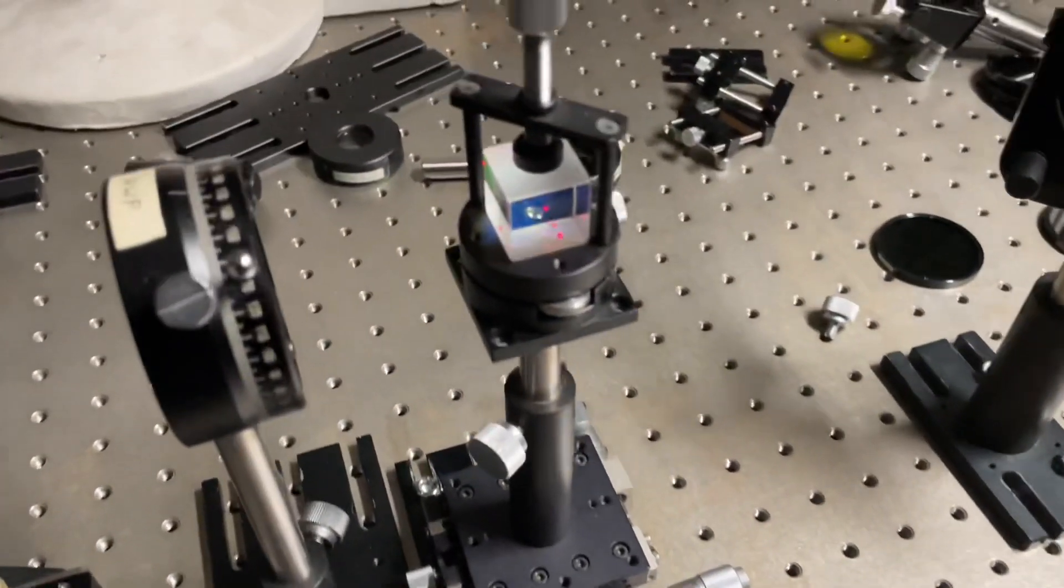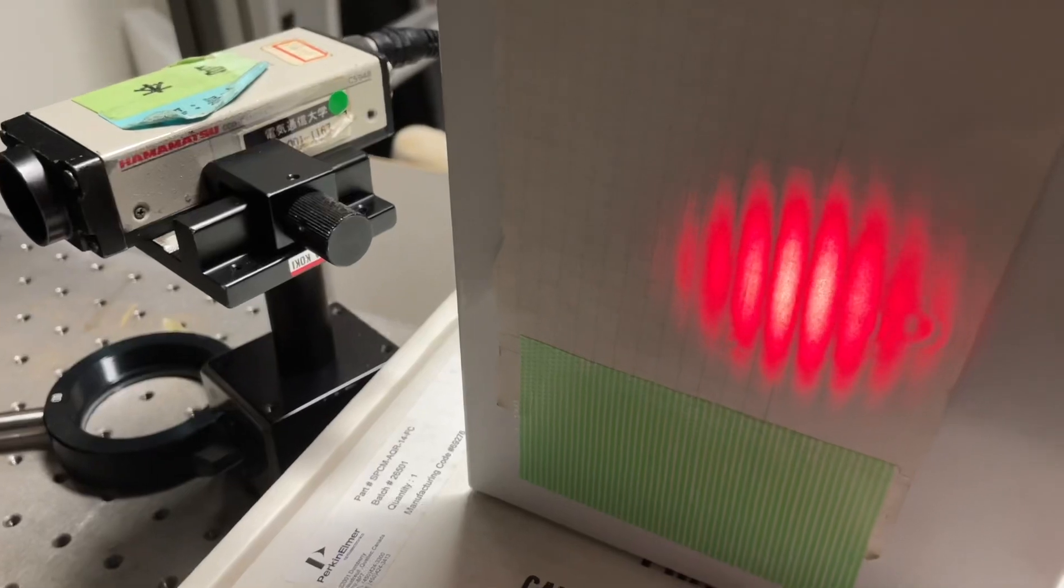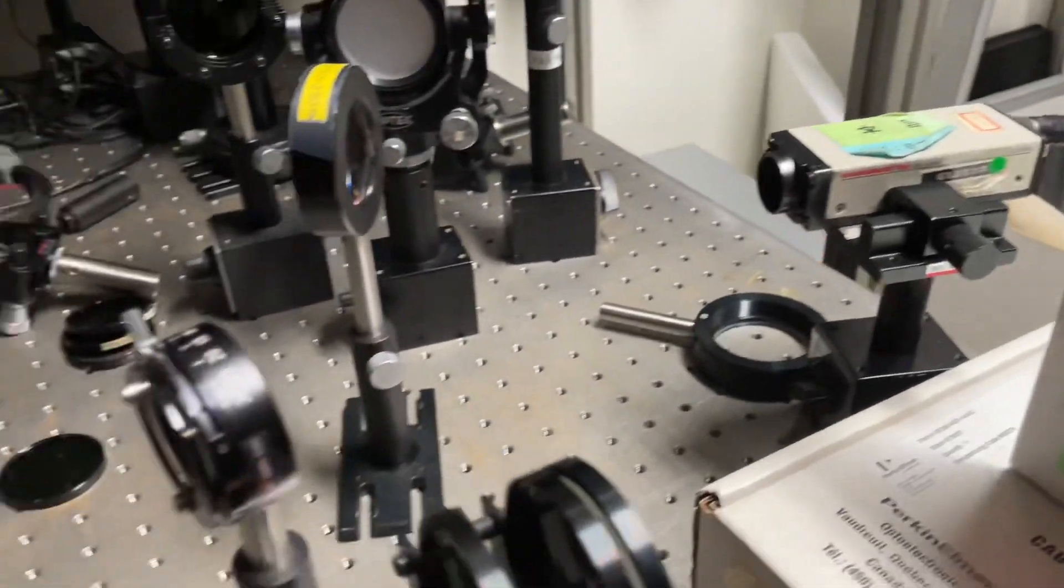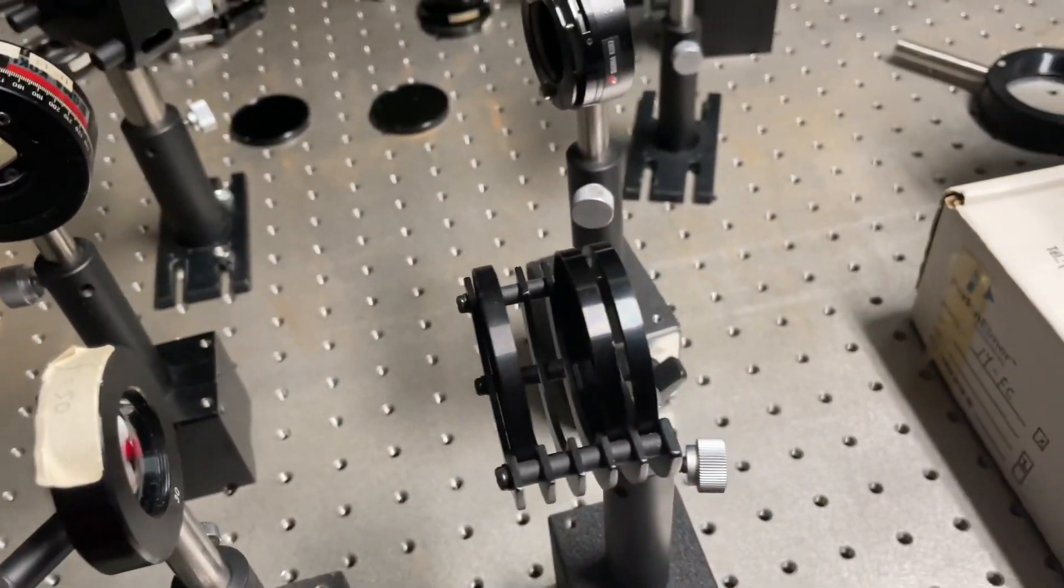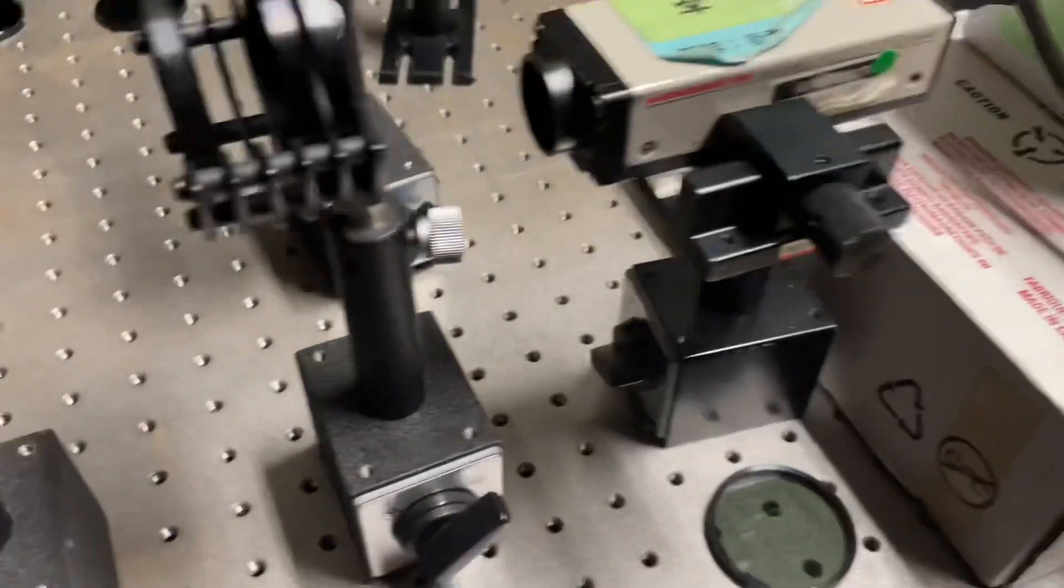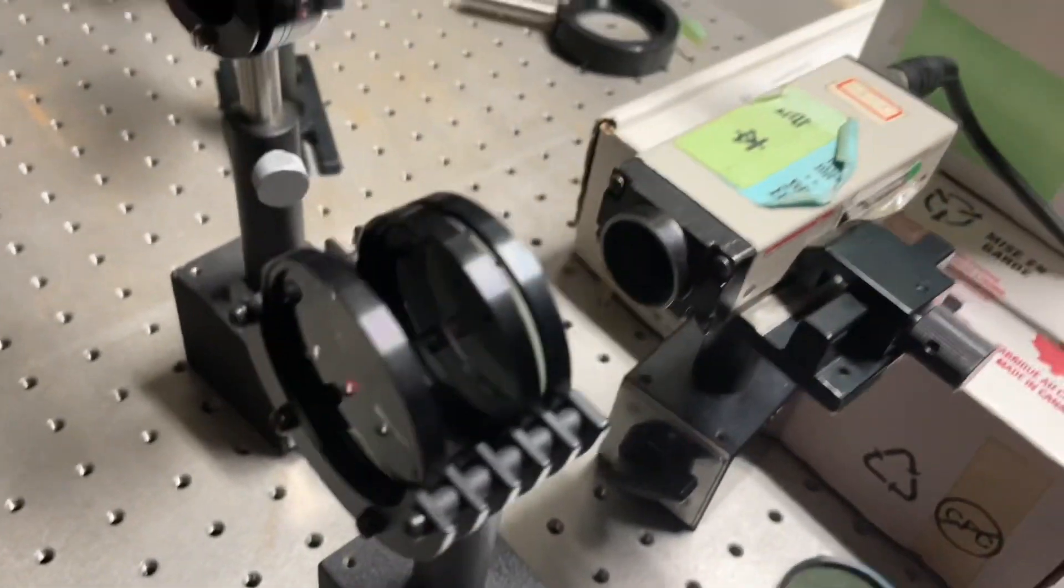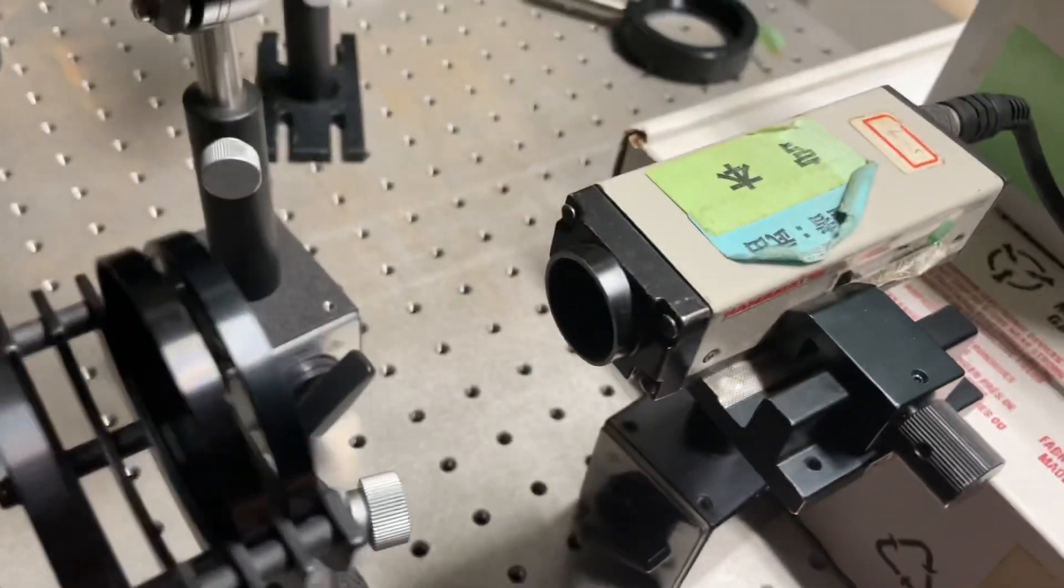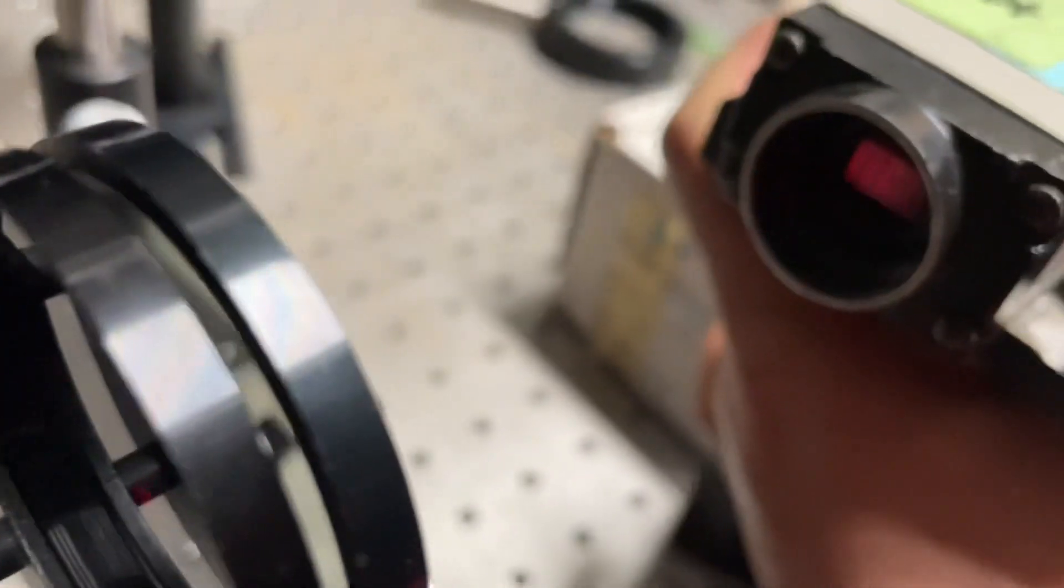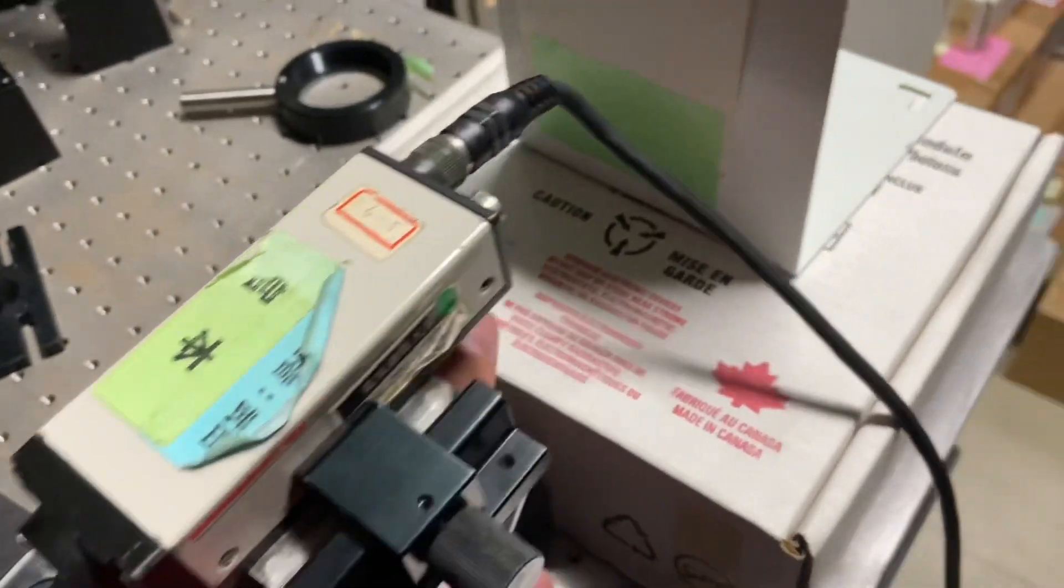The light reflects from here, and we can see this output here. If you want to record it, just use a neutral density filter and keep it in the way of the camera sensor. If you look at the camera sensor, you can see the fringes.